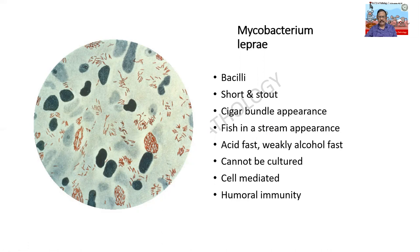Mycobacterium leprae is acid fast, weakly alcohol fast, and cannot be grown in culture. That perhaps is the greatest disadvantage, owing to which we have not been able to find a correct drug for leprosy in time. There are two types of immunity involved: cell mediated and humoral immunity. This particular stain is showing us a lot of lepra bacilli.